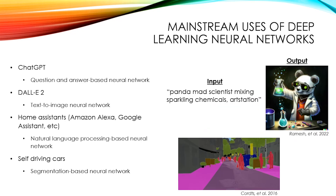There are many mainstream uses of deep learning neural networks. On the right, you can see a sample input and sample output of this system. Our home assistants — Amazon Alexa, Google Assistant, etc. — are natural language processing-based neural networks. And of course, self-driving cars use computer vision and route planning to navigate through the scene.